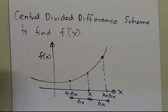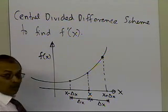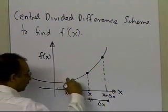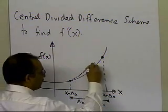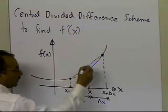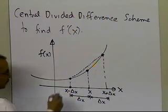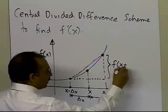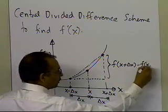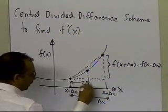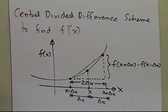Now, the secant line we draw in order to find the approximate value of the derivative of the function at this particular point — the first derivative — will be the line drawn from the value of the function at x minus Δx to the value of the function at x plus Δx. So the rise will be the value of the function at x plus Δx minus the value at x minus Δx, and the run is going to be two times Δx. That's how the central divided difference scheme allows you to calculate the derivative.